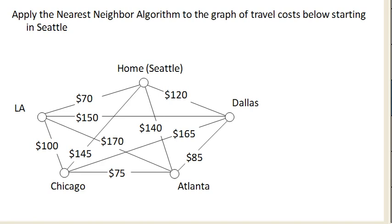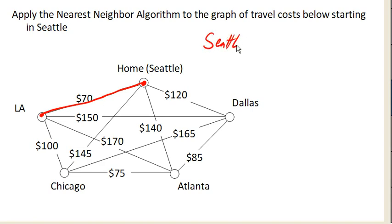We looked at some flight costs here, and let's see if we can find a pretty good circuit using the nearest neighbor algorithm. Starting here in Seattle, we say what is my cheapest option? We got 70, 145, 140, 120, so it looks like 70 is our best option. So far we got Seattle to LA.